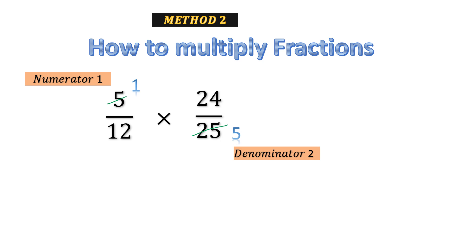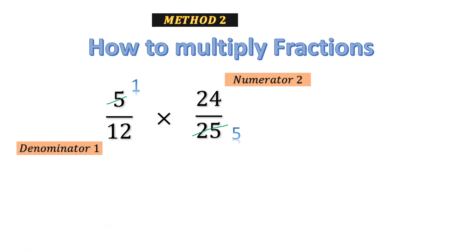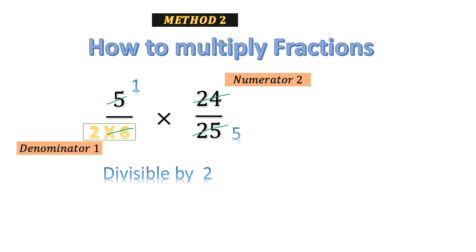Now let's come to 24 and 12 — numerator 2 and denominator 1. Suppose you don't know all the common factors for 12 and 24, or you don't have time to find the greatest common factor. You can see that both 12 and 24 are divisible by 2 because they have an even last digit. So if we divide 12 by 2 we get 6, and if we divide 24 by 2 we get 12. So our new numerator 2 is 12 and new denominator 1 is 6.